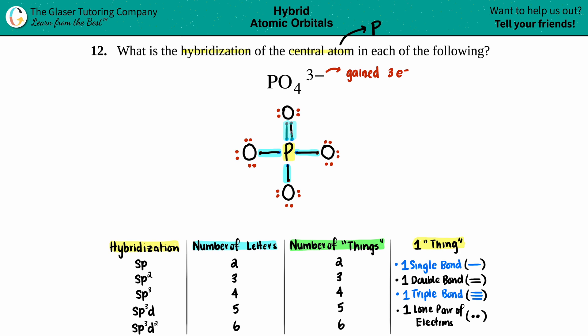And now here comes the double bond. Even though there's two lines, that's still classified as one thing. So phosphorus has a total of four things. It has no lone pairs in there. And just know I don't count any of these lone pairs because they belong to oxygen, not phosphorus, not the center atom. So four things, four letters.